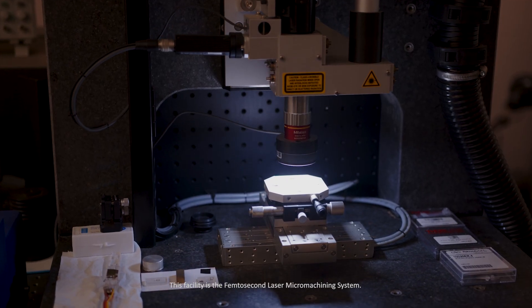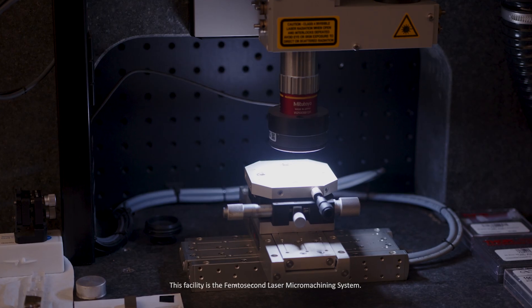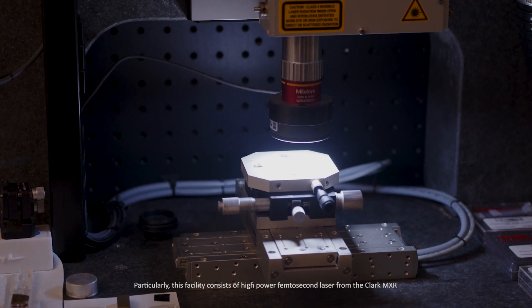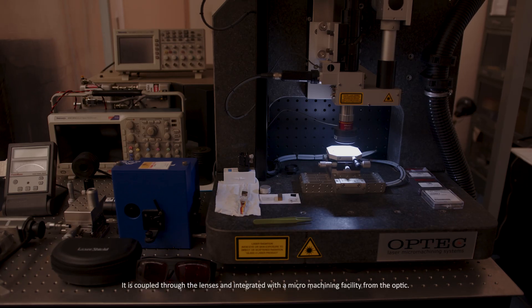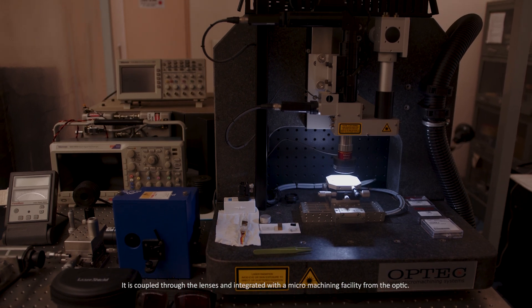This facility is the femtosecond laser micromachining system. Particularly, this facility consists of the high-powered femtosecond laser from Clark MXR with 775 and 1590 nanometer output possibilities and pulse energy of about 0.8 millijoules. It is coupled through the lenses and integrated with a micromachining facility from Optec.